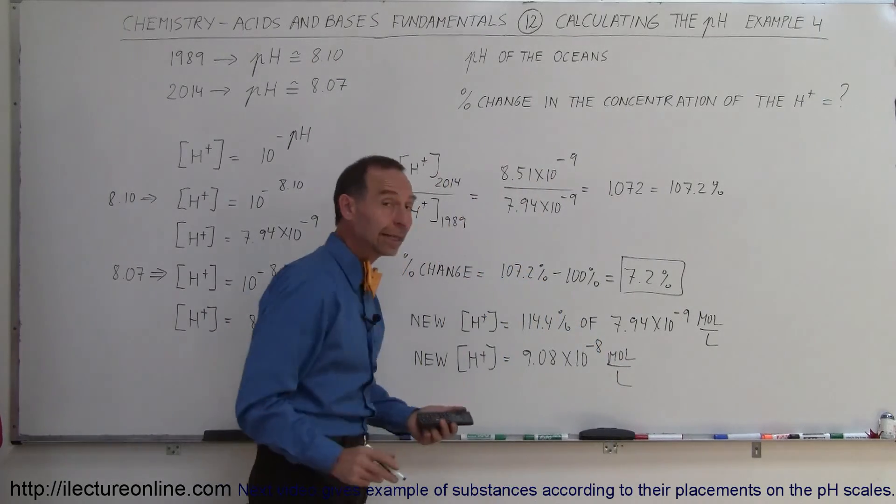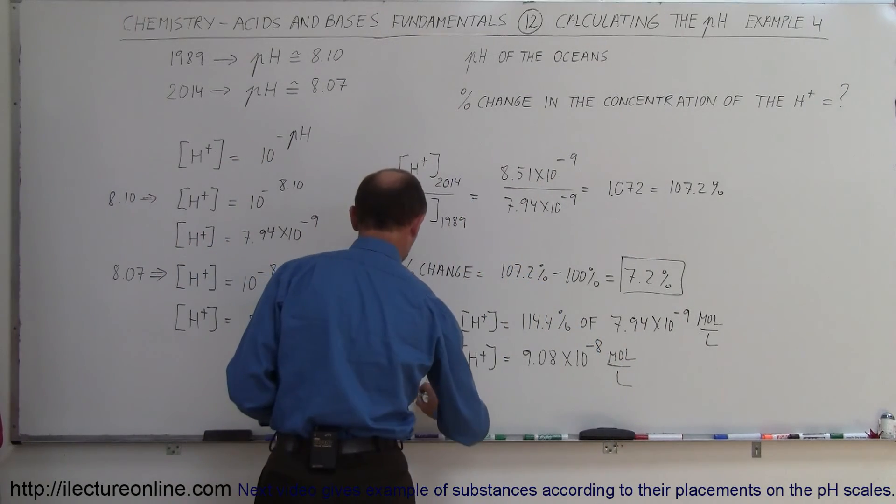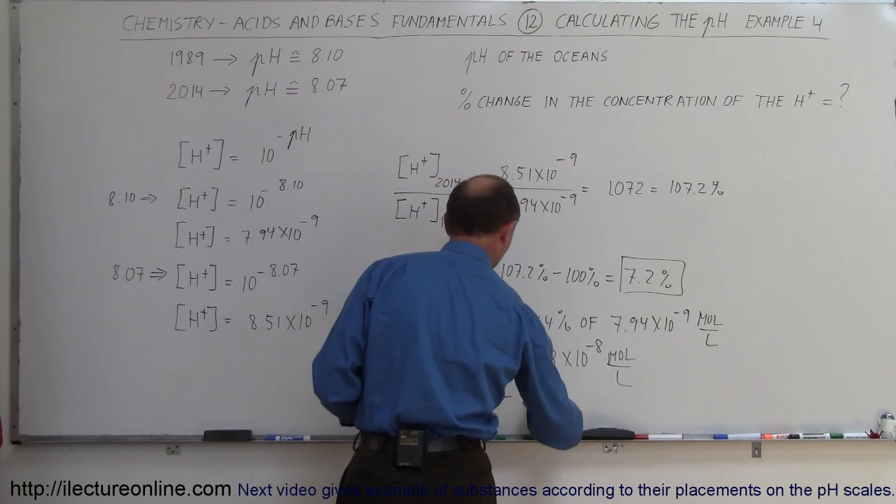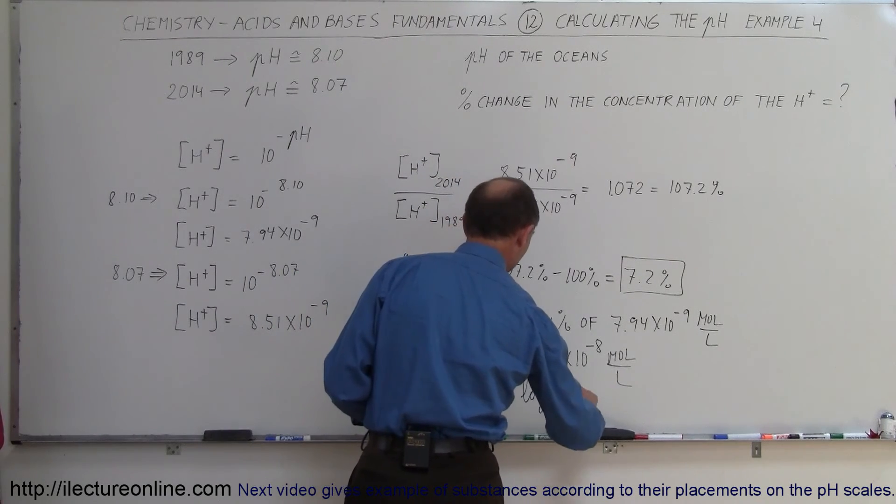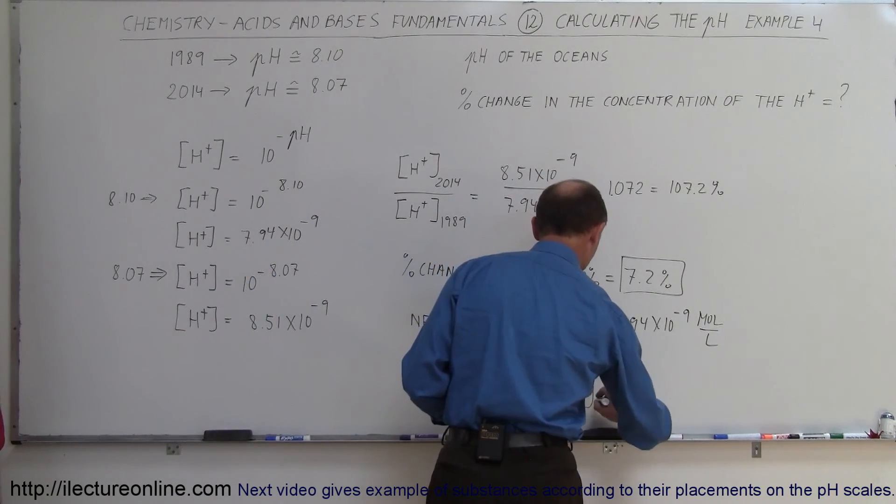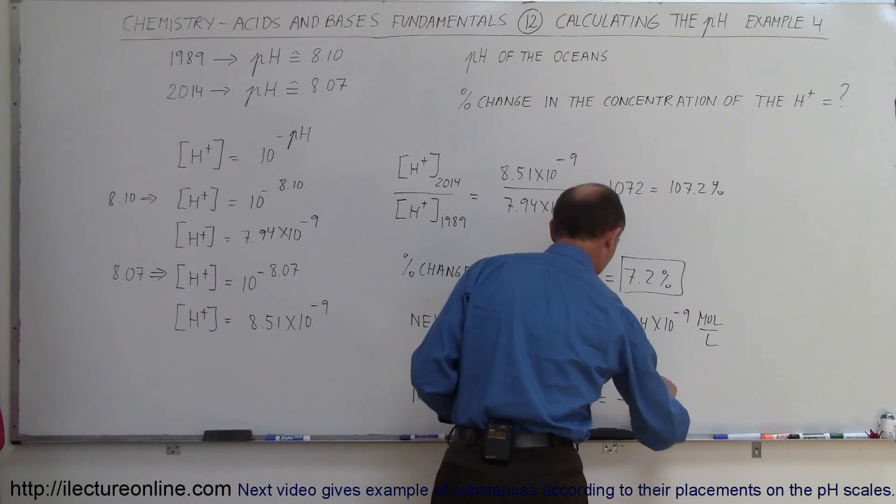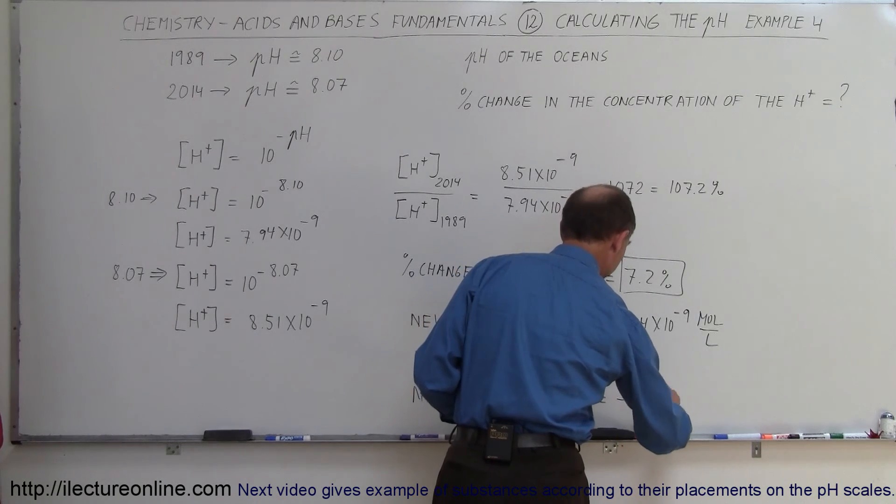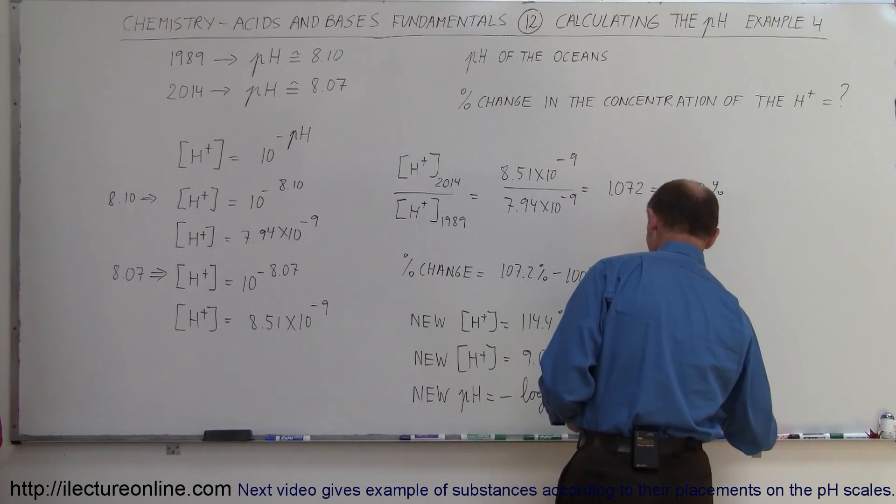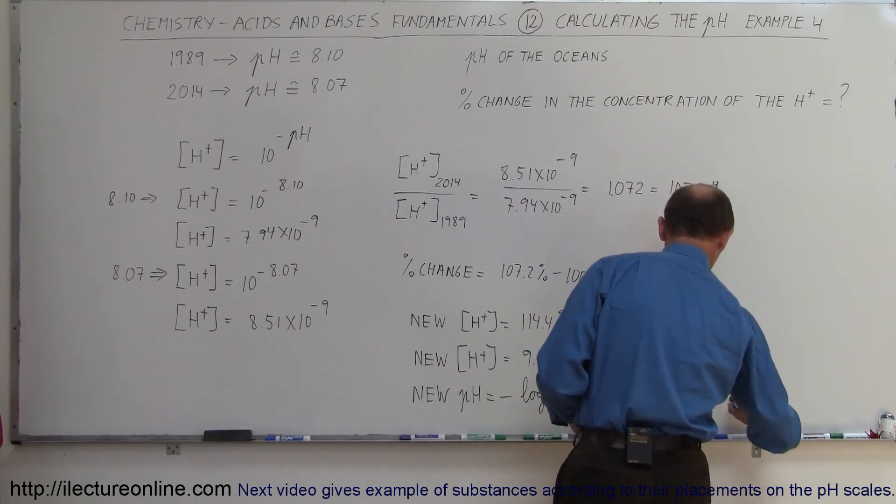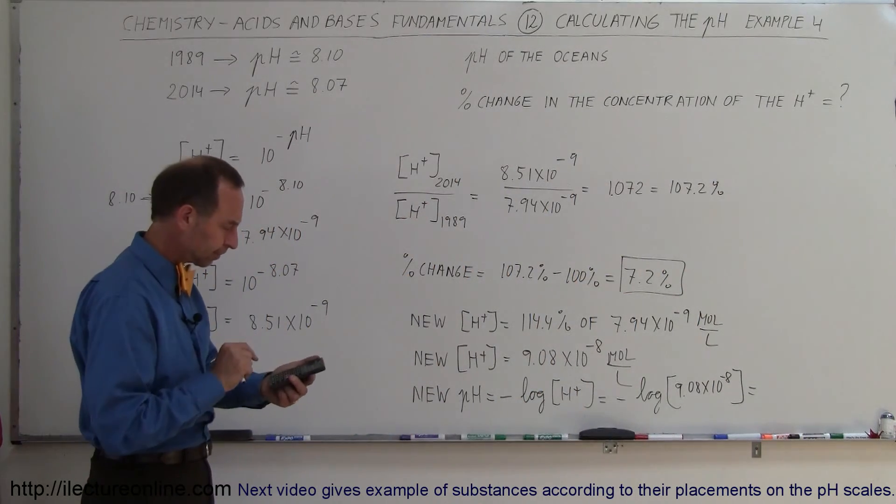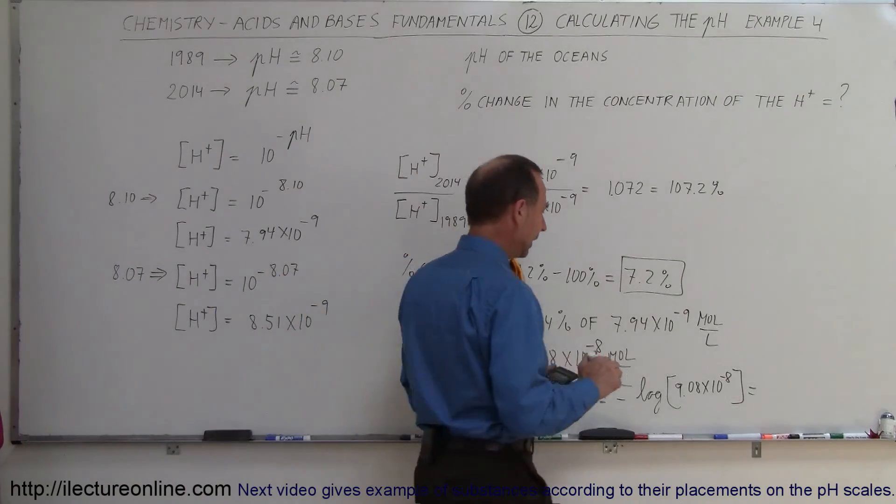And then let's calculate the new pH for that, because we can say that the new pH, which is equal to the negative of the log of the concentration. And since the concentration is that, it would be equal to the negative of the log of the new concentration, which is 9.08 times 10 to the minus 8. So let's find the log of that, and we get 8.04.